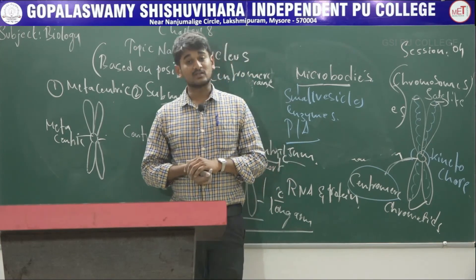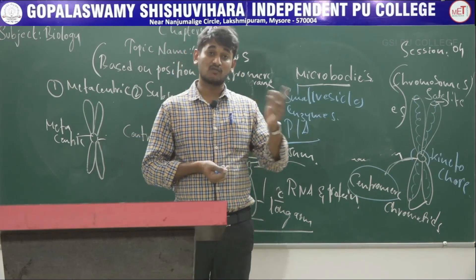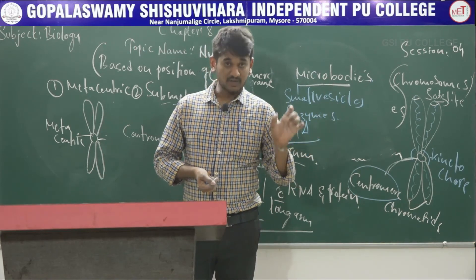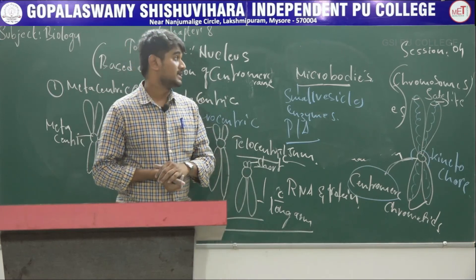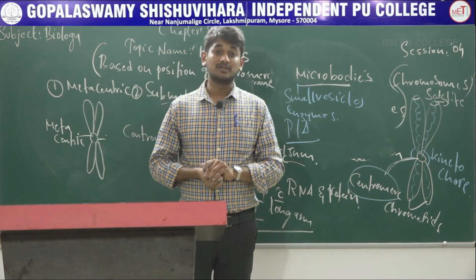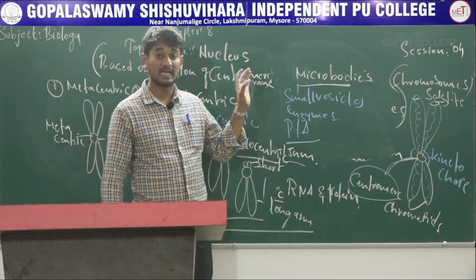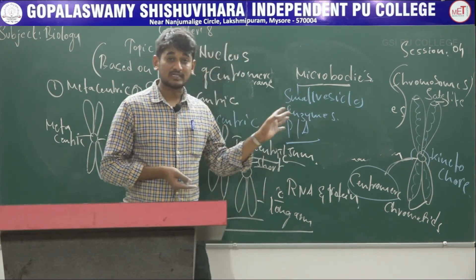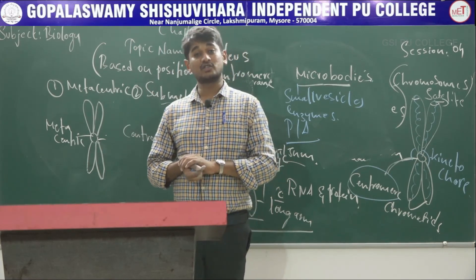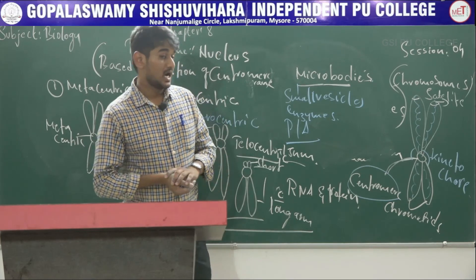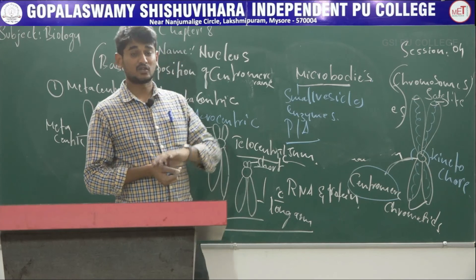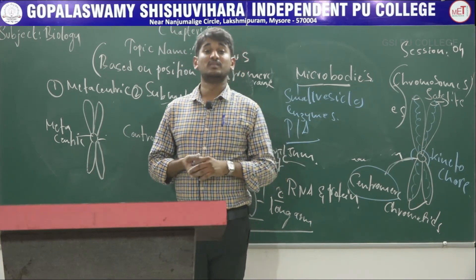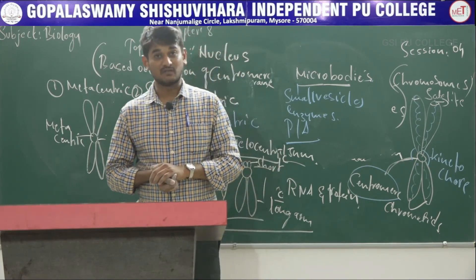To summarize: cytoskeleton is an elaborate network of filamentous proteinaceous structures consisting of microtubules, microfilaments, and intermediate filaments collectively present in the cytoplasm. Its functions include motility, maintaining cell shape, and providing mechanical support. The electron microscopic study of cilia and flagella shows 9 radially arranged peripheral microtubules connected by linkers, and a central pair of microtubules — the 9+2 arrangement. Centrosomes contain two cylindrical centrioles, and they help in the formation of spindle fibers during cell division.